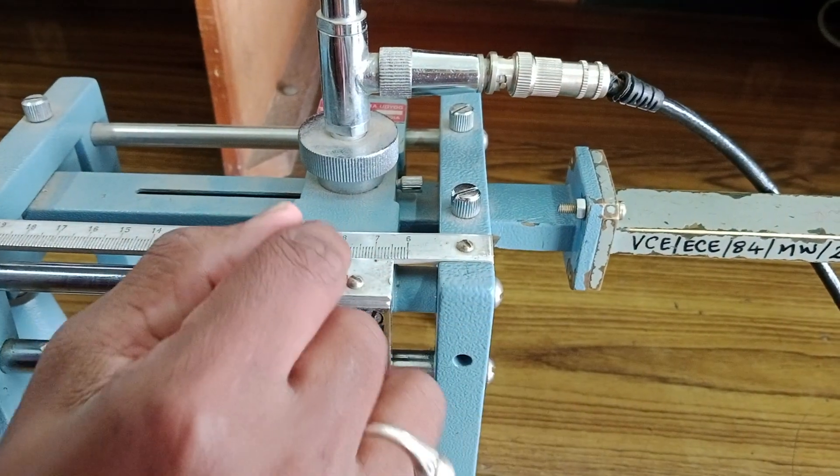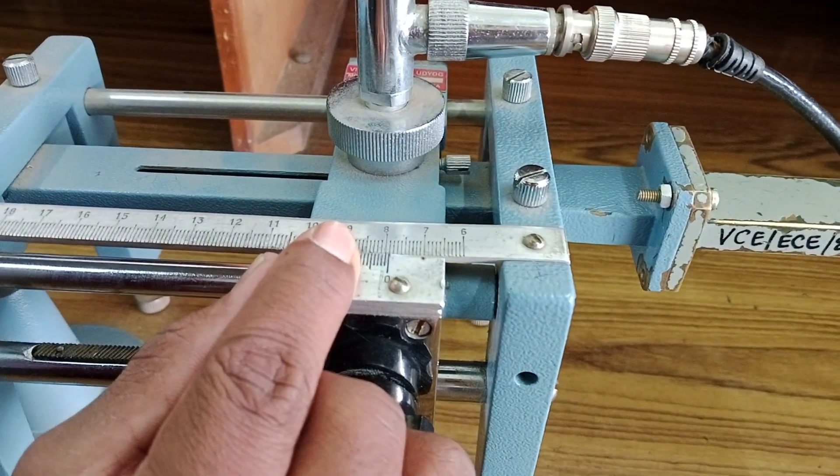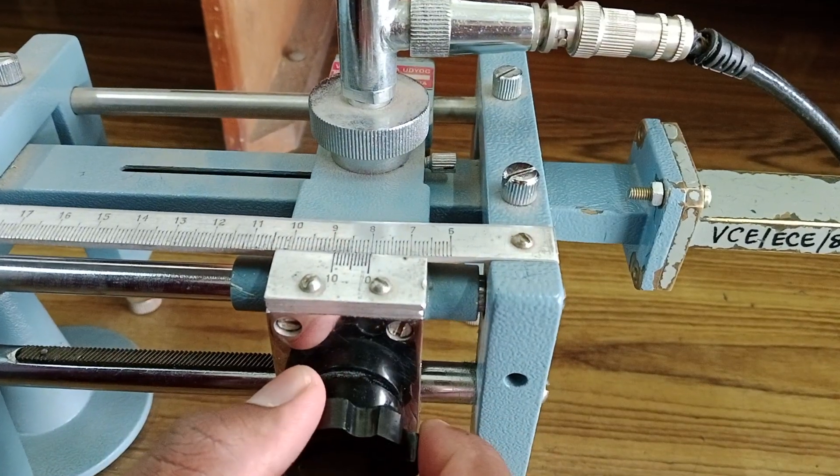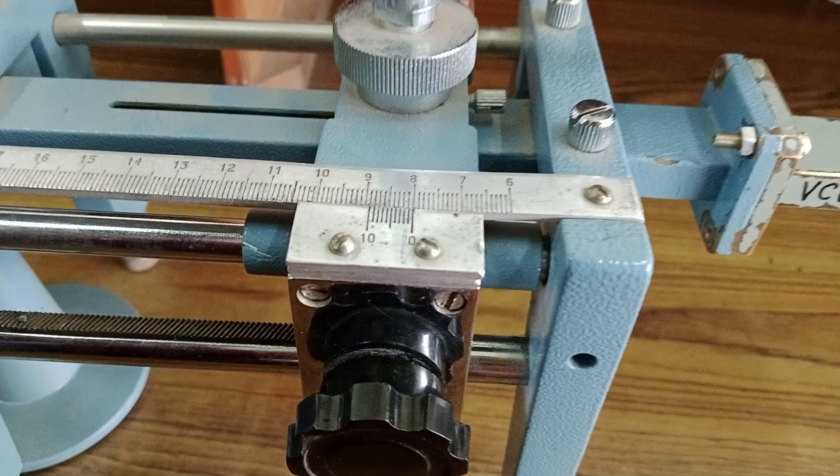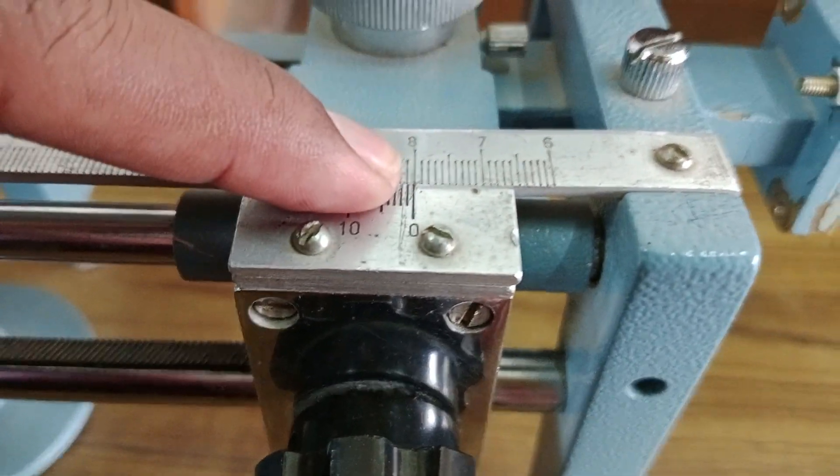So the first point, first zero point of the scale, whatever it is matching to the reading on the fixed scale, is the first reading before the decimal. That is if you see here, it is eight that is matching with the zero. So it is eight, first digit.